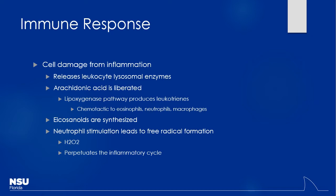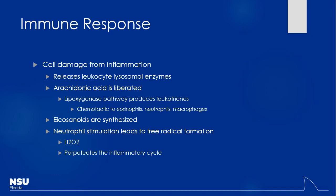As immune cells get activated, they're releasing inflammatory cytokines and lysosomal enzymes, doing damage to the joints themselves. When you think about RA joints, they're hot, red, inflamed, and swollen. These are the things we're going to focus on when dealing with that inflammation. There's also a lot of neutrophil damage happening here.